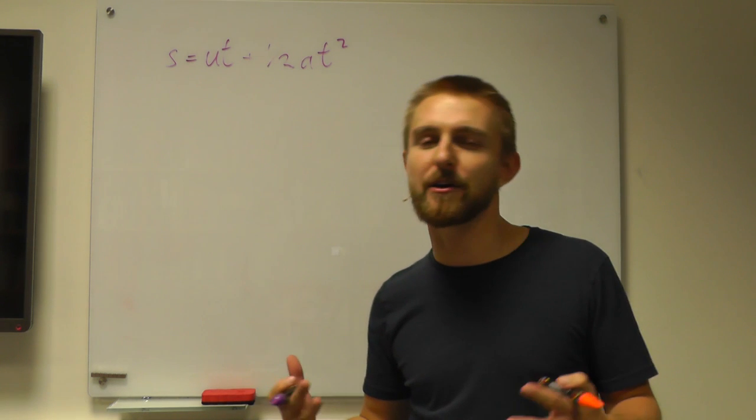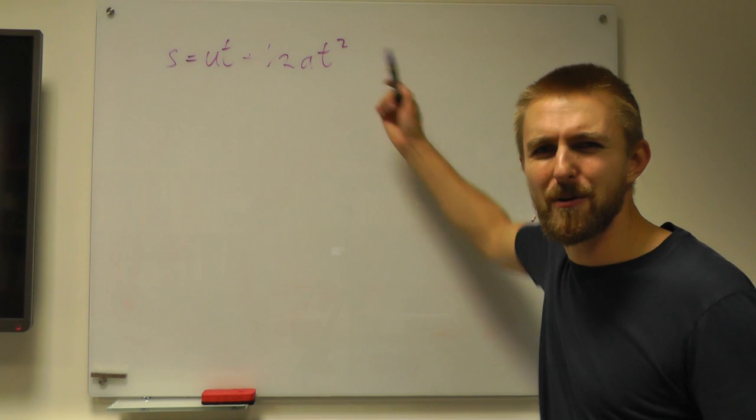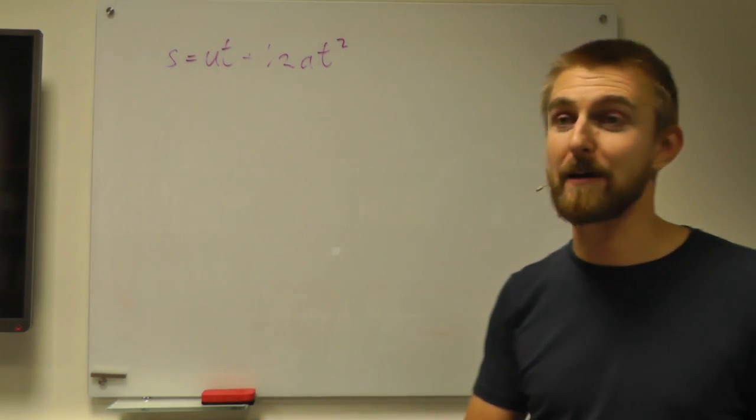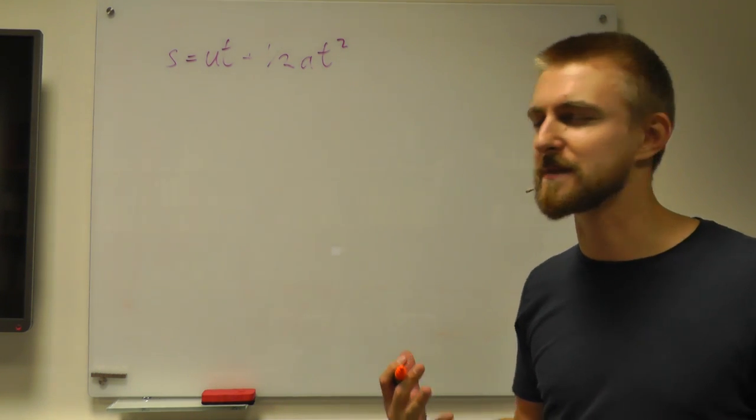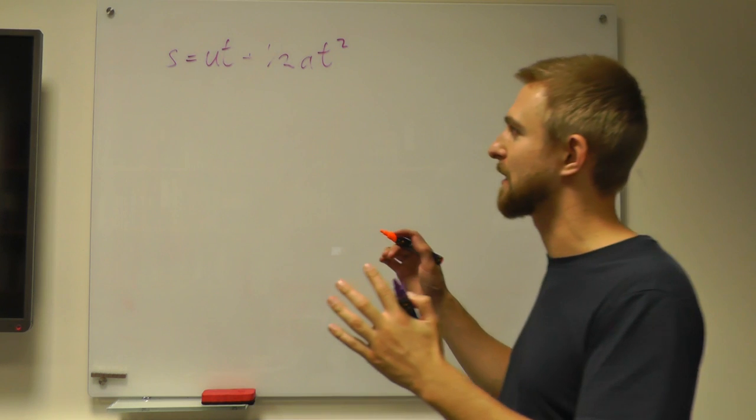If under exam conditions you're a bit stressed, maybe you've forgotten should this be at squared or av squared. So one quick and very effective way of working that out is to look at the units of every term, because the units have to be the same on both sides of the equation.